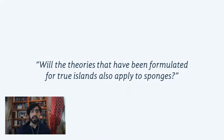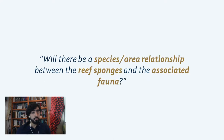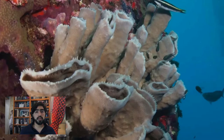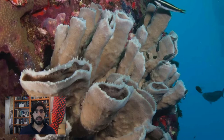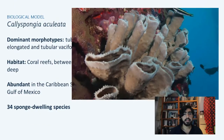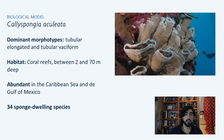This sponge characteristic leads us to the question: will the theories formulated from true islands also apply to these sponges? In other words, will there be a species-area relationship between the reef sponges and the associated fauna? To answer this question, we selected a sponge with the following characteristics: abundant on the reef, a good number of associated species, and easy to collect.